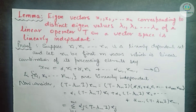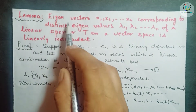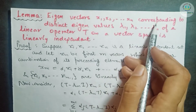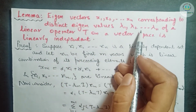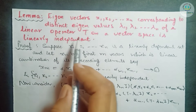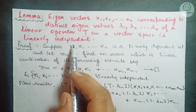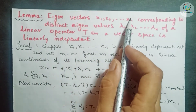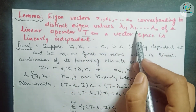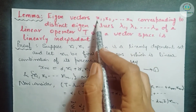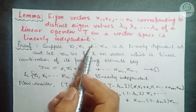Before the proof of the main theorem, we will discuss this lemma. Statement of lemma: eigenvectors x1, x2, ..., xn corresponding to distinct eigenvalues λ1, λ2, ..., λn of a linear operator T on a vector space are always linearly independent. That is, eigenvectors corresponding to distinct eigenvalues always form a linearly independent set.